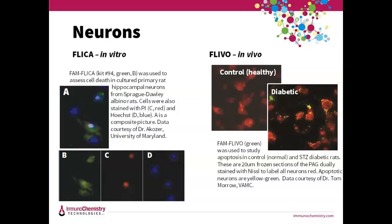In the example on the right with FAM FLIVO — our green reagent — we're looking at brain sections. FLIVO crosses the blood-brain barrier and was used to study brain damage in diabetic rats. The top is the control rat and the bottom is the STZ diabetic rat at eight weeks. Thirty minutes before sacrificing the animals, FAM FLIVO was injected IV, then 20-micron frozen sections of the periaqueductal gray section of the brain were prepared and counterstained with Nissl, which is red fluorescent and identifies all neurons. Dying apoptotic neurons appear yellowish-green with FAM FLIVO. In this model, diabetic animals show greater levels of caspase activity in the periaqueductal gray than control animals.